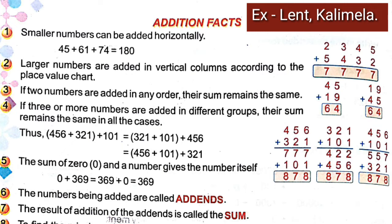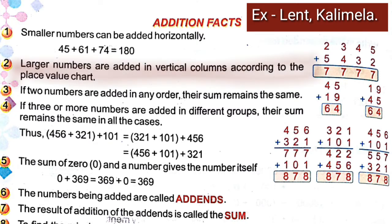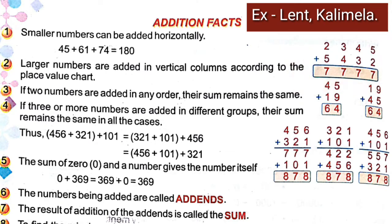This is the first fact of addition. Second fact: larger numbers are added in vertical columns according to the place value chart. When we add large numbers, we write them in vertical columns — one number below the other. We have to write according to the place value chart, meaning ones below ones, tens below tens. See the example given here.